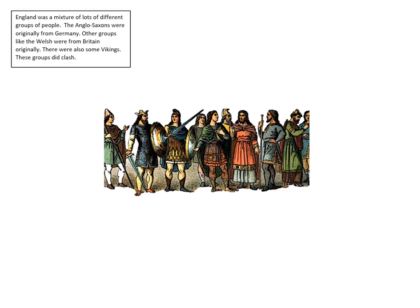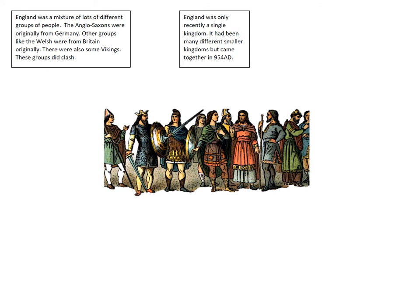England was a mixture of lots of different people and groups — there was vast diversity. People had very different cultures, languages and beliefs. The Anglo-Saxons became the most dominant of those groups and they are originally from Germany, from a region called Saxony, but there were other groups too. The original Britons really became the Welsh, and there were other groups like the Vikings. Those different groups often had conflict between them. England was only a single country towards the end of the Anglo-Saxon period — up to that point England was lots of little different kingdoms, and the Anglo-Saxons are the group that really unified those kingdoms into a single country.